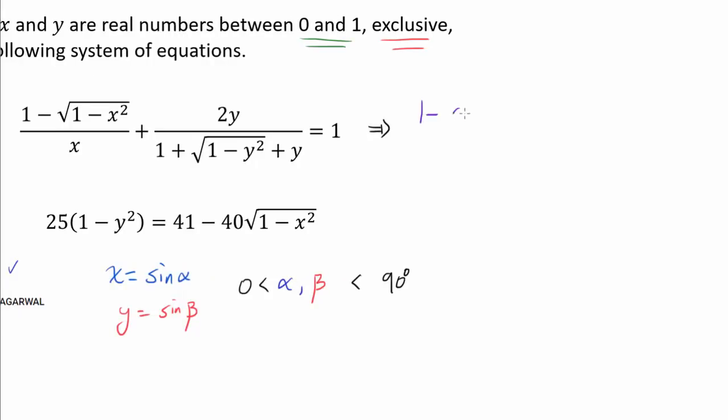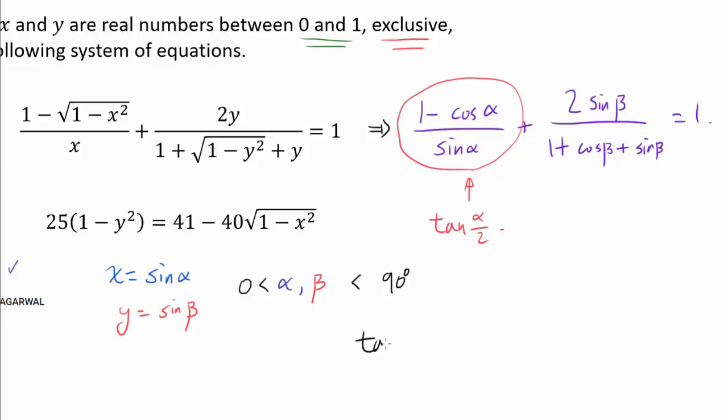Well, we are going to get 1 minus cosine of alpha over sine of alpha plus 2 times sine of beta over 1 plus cosine beta plus sine beta is 1. And something you may notice is that 1 minus cosine of alpha over sine of alpha is actually tangent of alpha over 2. Just in case you have forgotten this since your pre-calculus class, let me actually write this down. It can be proven that tangent of beta over 2 is 1 minus cosine of beta over sine of beta, or even sine of beta over 1 plus cosine of beta.